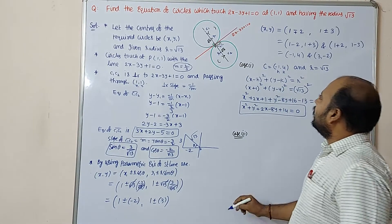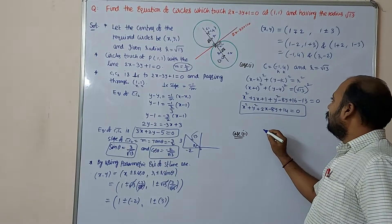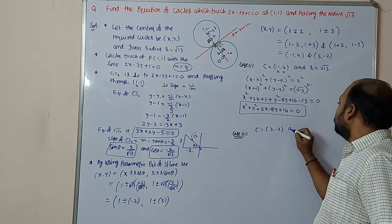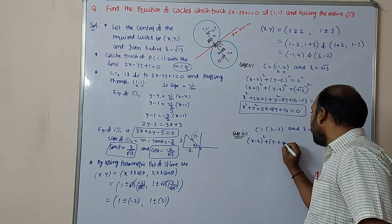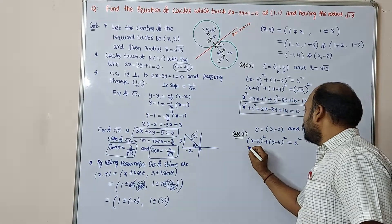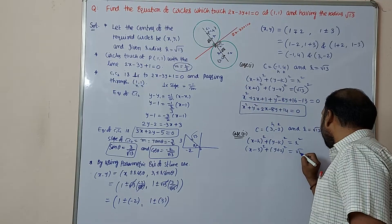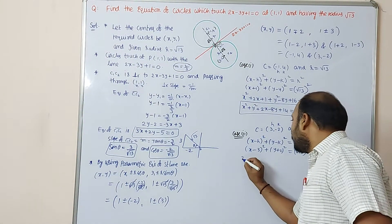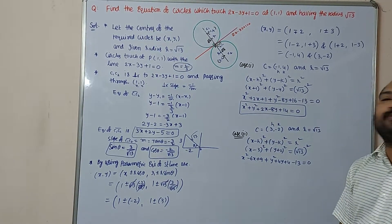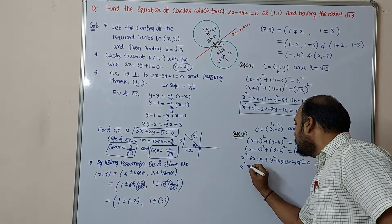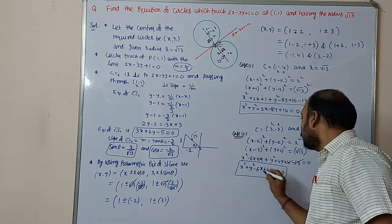Case 2: center c equals (3, minus 2) and radius r equals root 13. Using (x minus h)² plus (y minus k)² equals r²: (x minus 3)² plus (y plus 2)² equals 13. Expanding: x² minus 6x plus 9 plus y² plus 4y plus 4 minus 13 equals 0. Since 9 plus 4 minus 13 equals 0, this simplifies to x² plus y² minus 6x plus 4y equals 0.